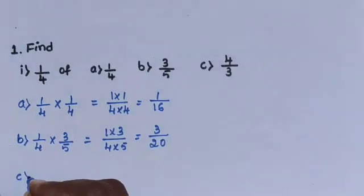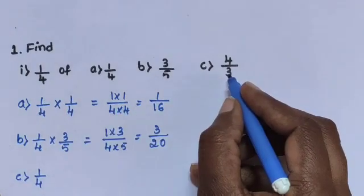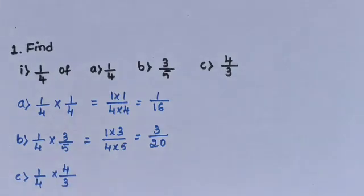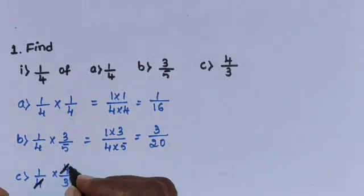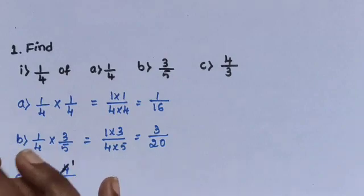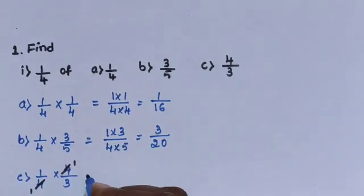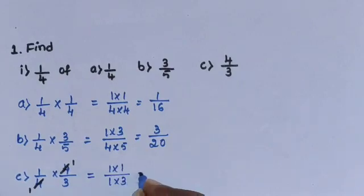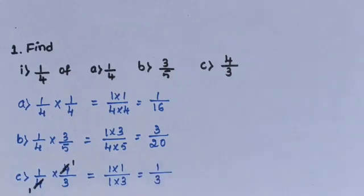Next, question C: 1/4 multiplied by 4/3. The 4s get cancelled. Remaining: 1×1 divided by 1×3. 1 ones are 1, 1 threes are 3. The answer is 1/3.